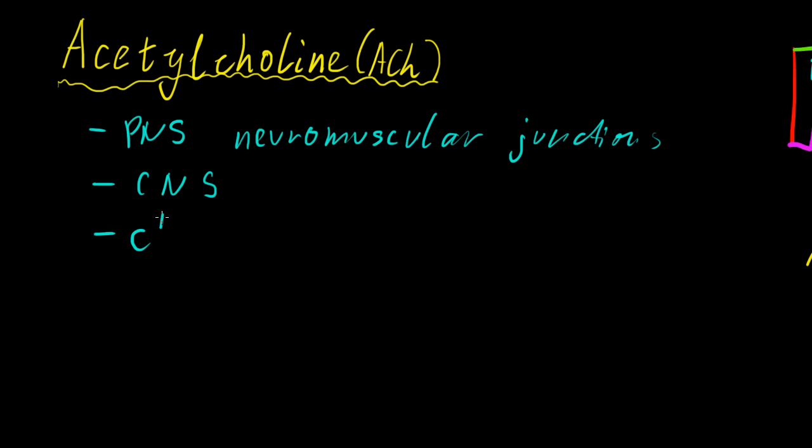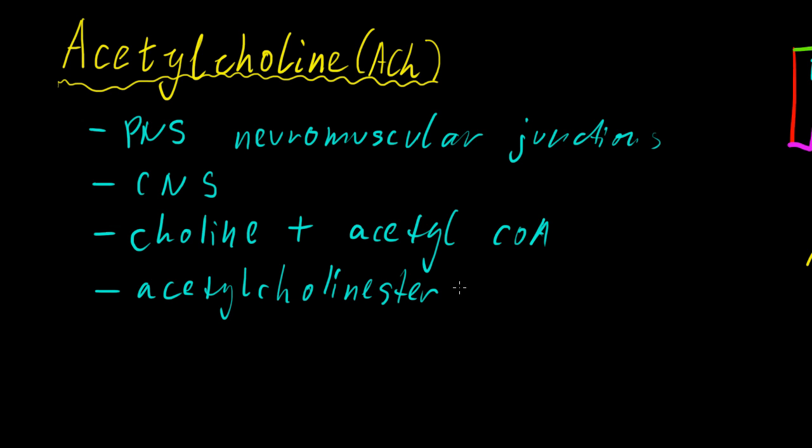We make it by choline and acetyl-CoA. But interestingly, when it acts postsynaptically, as we talked about in Part 10, it's broken down by something called acetylcholine esterase, which is an enzyme, and that breaks it down actually into choline and acetate. So not the acetyl-CoA. It gets taken up by the presynaptic neuron eventually and can be converted back into a functional form, into acetylcholine.